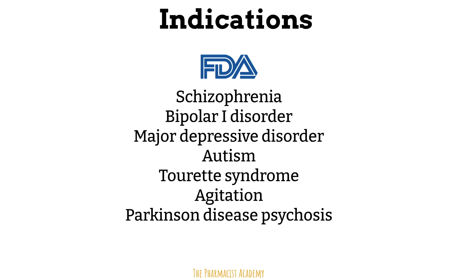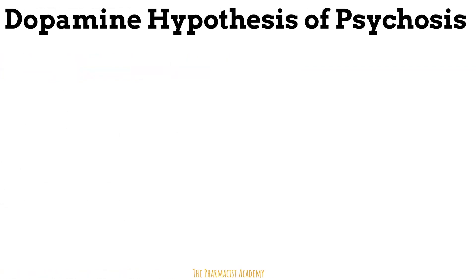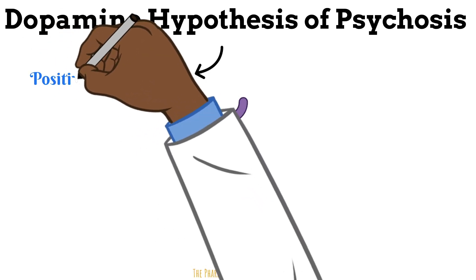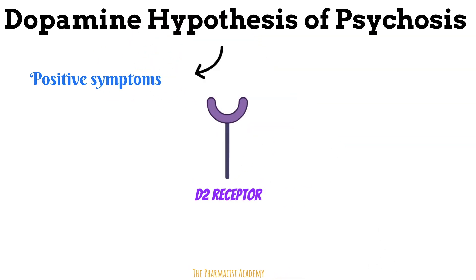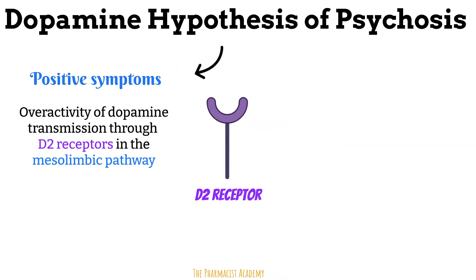Although these agents are utilized for all of these conditions, let's review the mechanism of action focusing specifically on the treatment of schizophrenia. Schizophrenia patients present with psychotic symptoms or psychosis, so going forward, when I say psychosis, you can just think of schizophrenia. As mentioned earlier, the dopamine hypothesis addresses what the problem is in patients with psychosis. This hypothesis postulates that positive symptoms are due to an overactivity of dopamine transmission through the D2 receptor and the mesolimbic pathway.